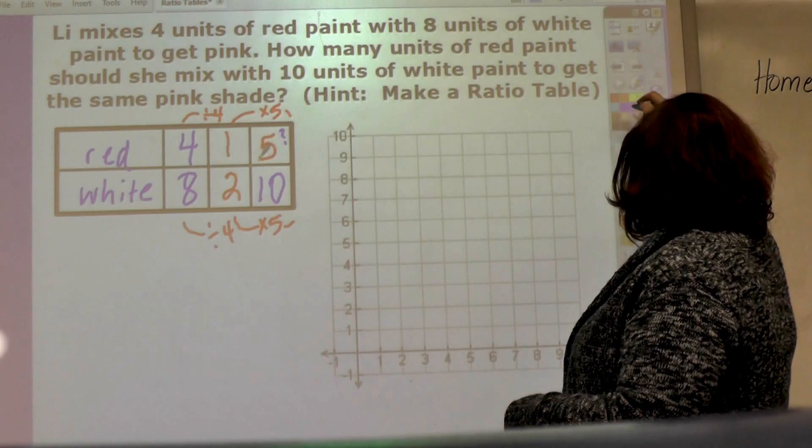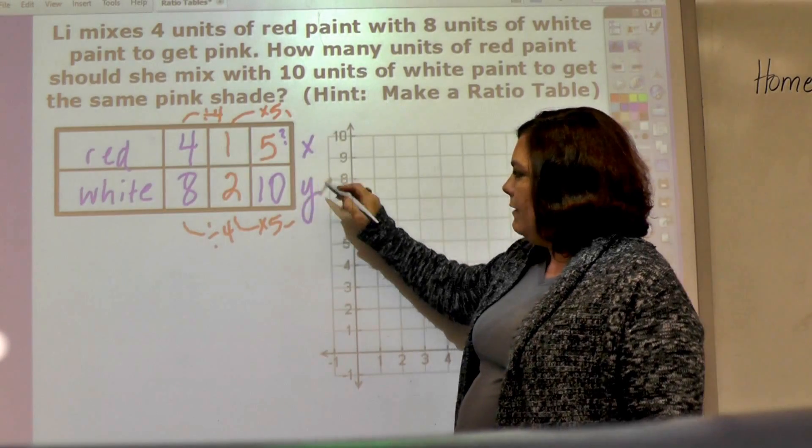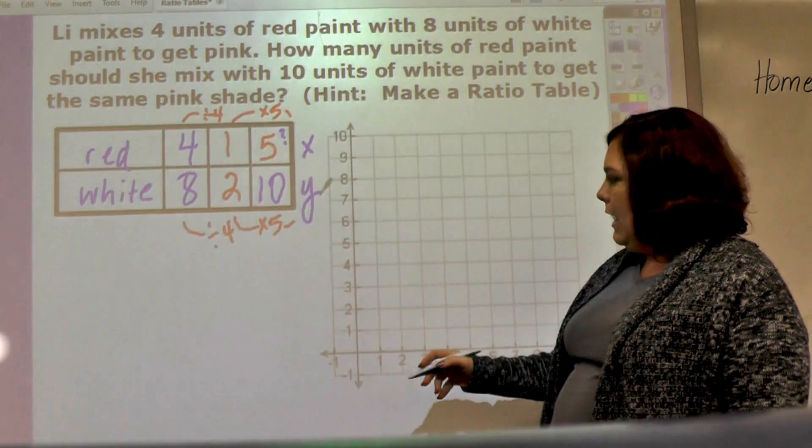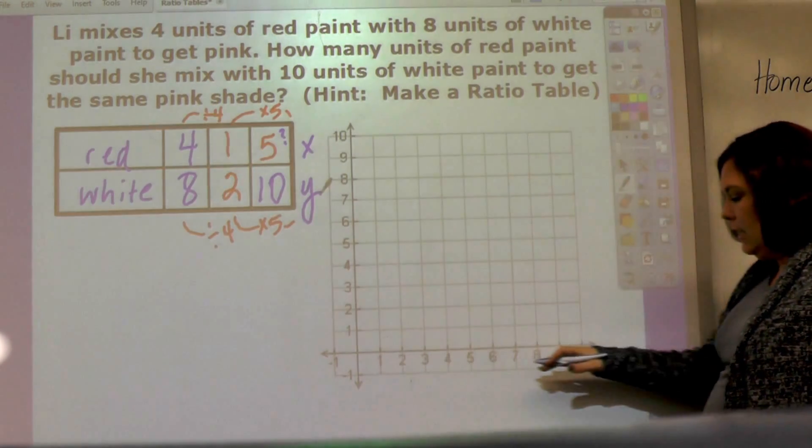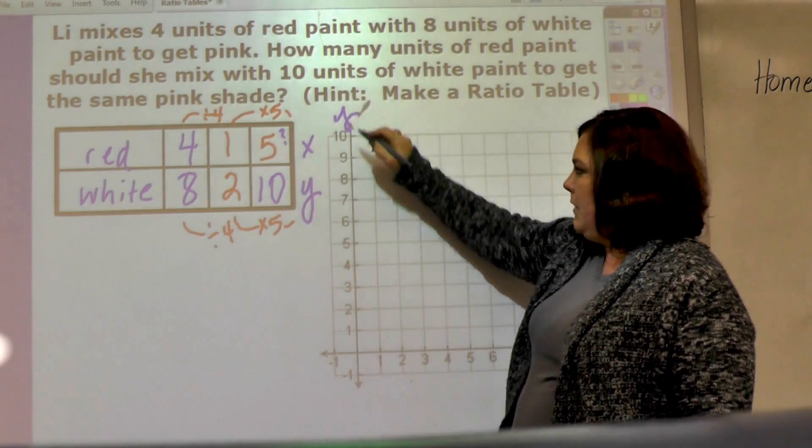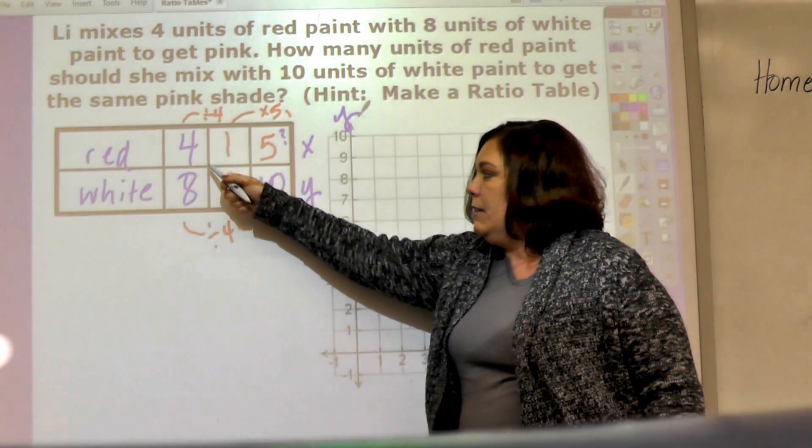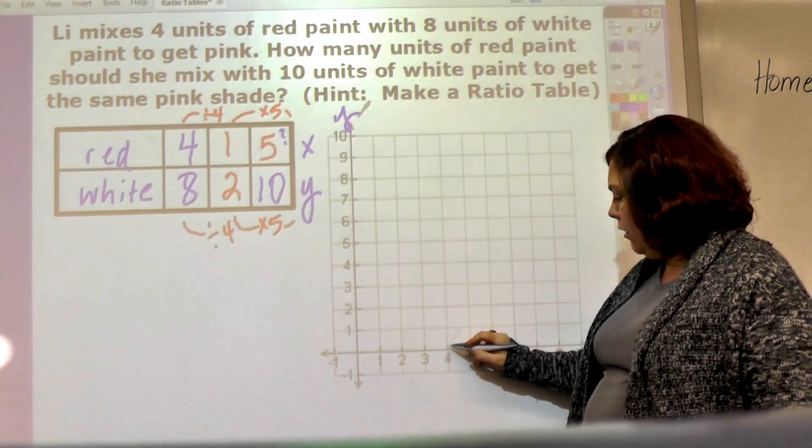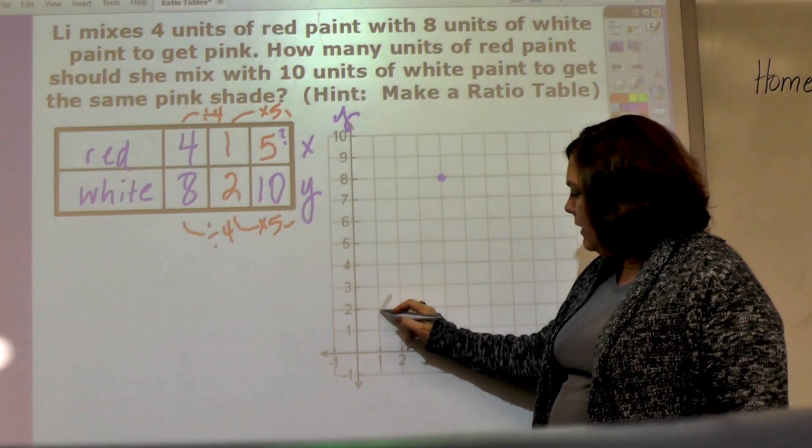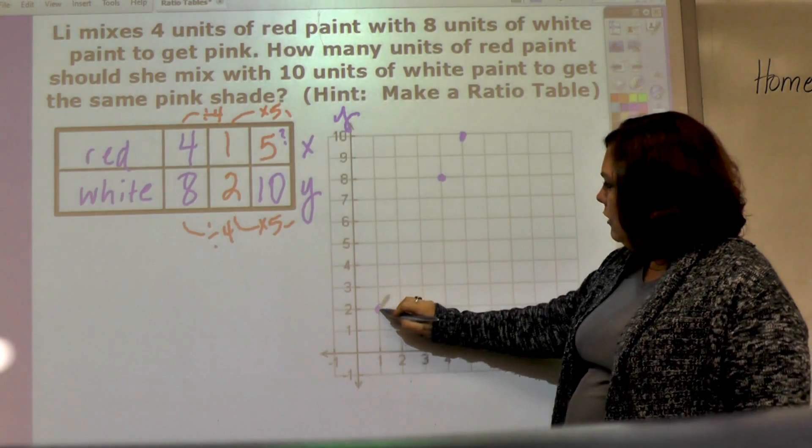To plot this on the graph, we have to think this is x and this is y. This is my x component and this is my y coordinate. X goes first and it goes across because you walk before you jump. Y goes up here and x down here and y up here. So I can plot 4 over and 8 up, and I can plot 1 over and 2 up, and then 5 over and 10 up.